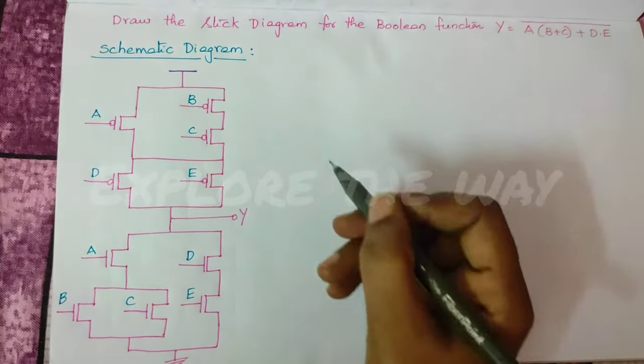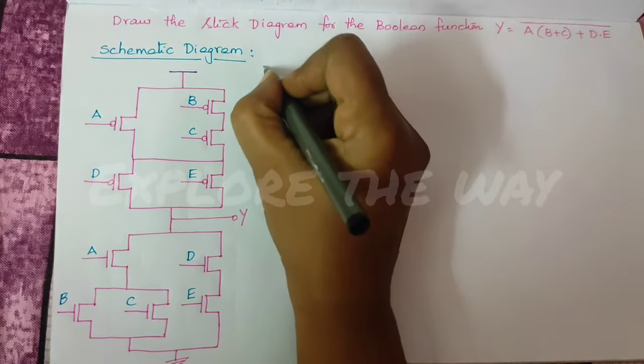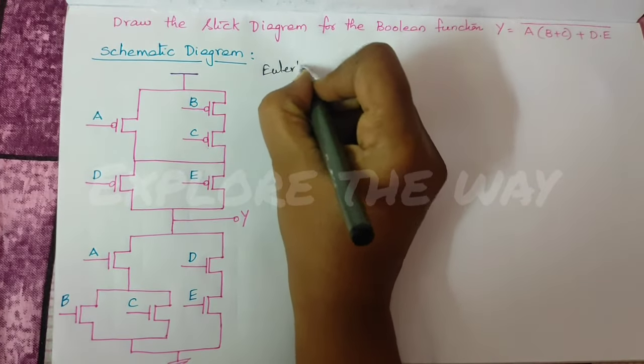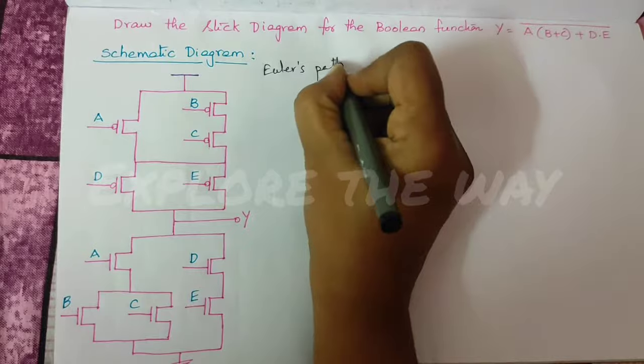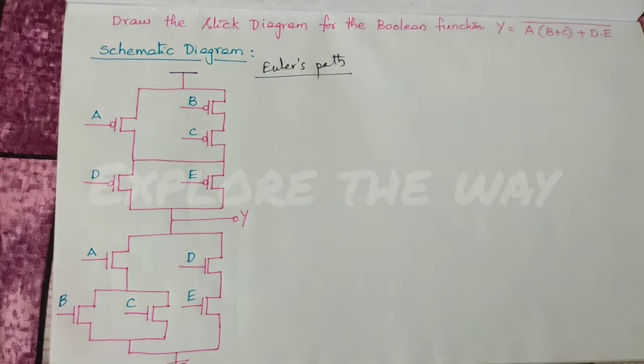Next, to draw the stick diagram, find the Euler's path. Now, the Euler path must be same for pull-up and pull-down network.